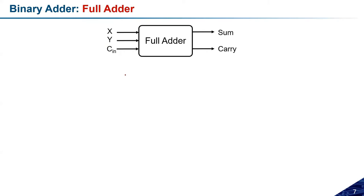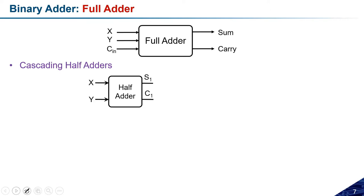You cannot make a full adder with the help of a single half adder. If you want to make a full adder using half adders, you need to cascade some half adders. Suppose we have one half adder with two inputs X and Y, giving sum S1 and carry C1.